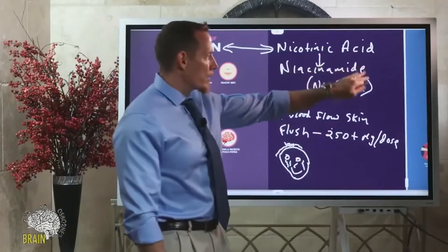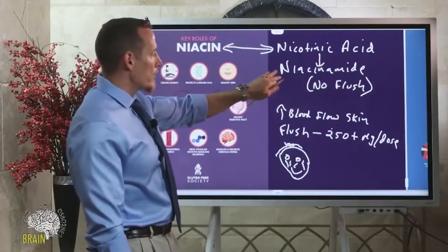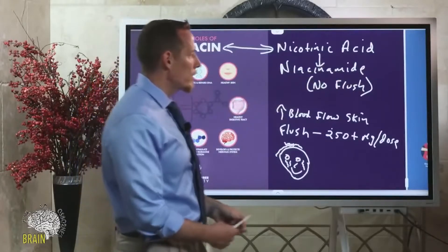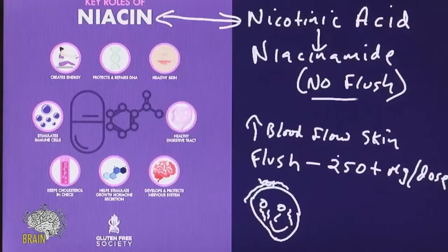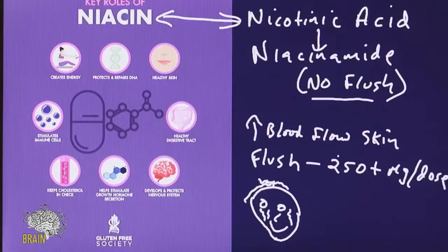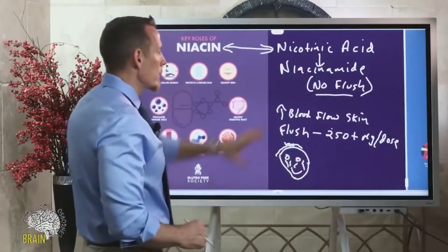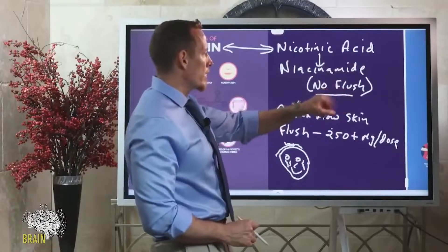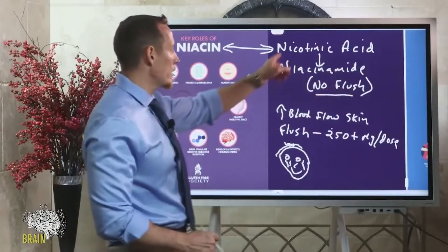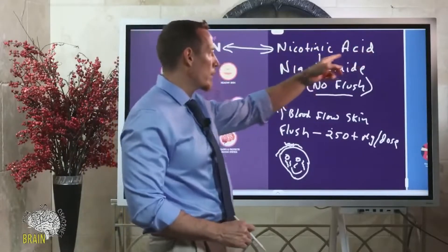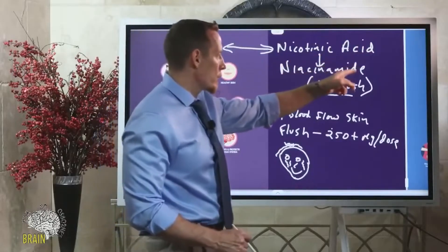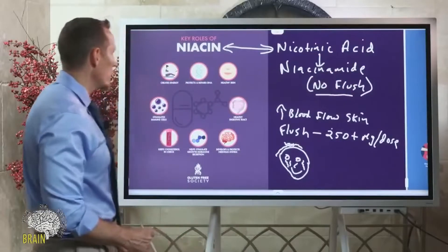There's a form of niacin called niacinamide, which is a supplemental form you can take that doesn't deliver that flushing reaction. It's not as effective though. So if you use pure niacin or nicotinic acid, it's very effective depending on what you're trying to do with it, versus the niacinamide, the no-flush version. For effectiveness, niacin is your best form. For not flushing, niacinamide is your best form.